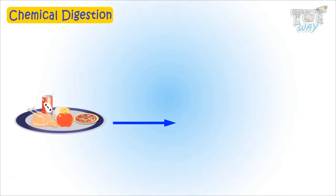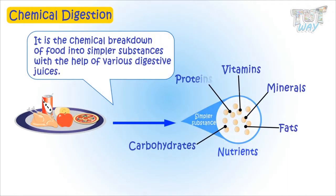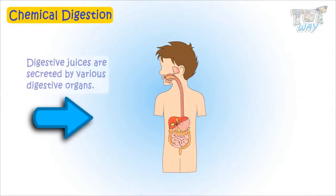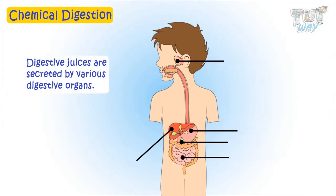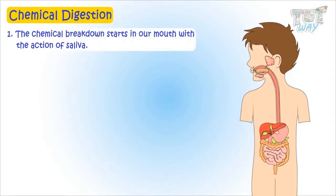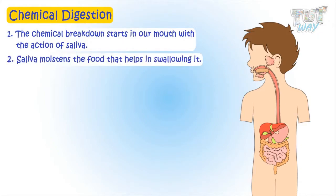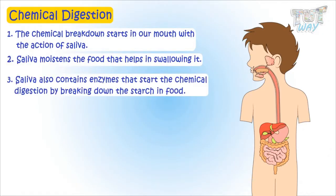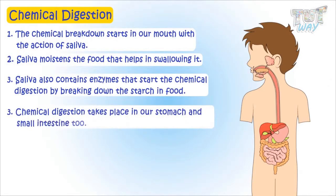The second type is chemical digestion. Chemical digestion is the chemical breakdown of food into simpler substances with the help of various digestive juices. Digestive juices are secreted by various digestive organs and contain enzymes that break down larger molecules into simpler and smaller ones. The chemical breakdown starts in our mouth with the action of saliva. Saliva moistens the food to help in swallowing and also contains enzymes that start chemical digestion by breaking down the starch in food. After that, chemical digestion takes place in our stomach and small intestine too.